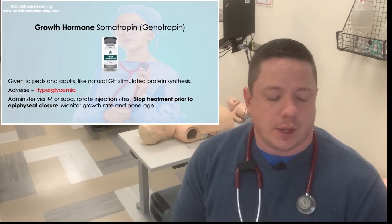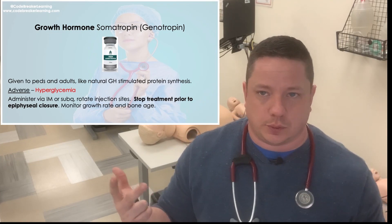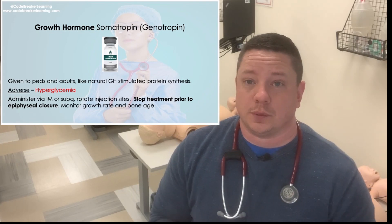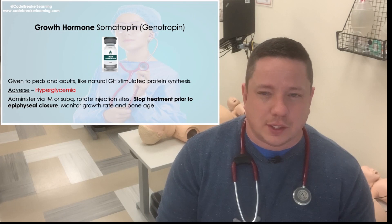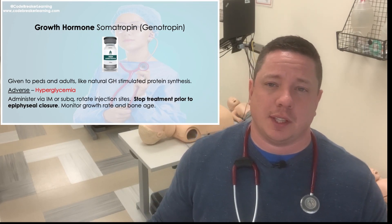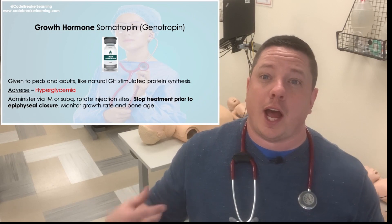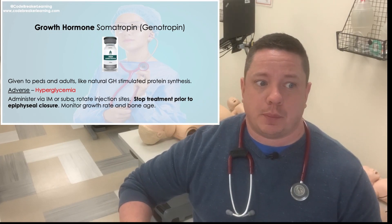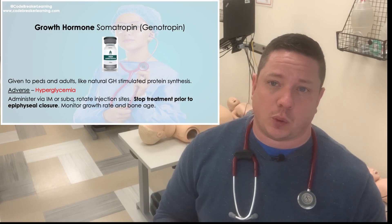The first medication is growth hormone — somatropin, also known as Genotropin. Somatropin is a growth hormone medication. What does growth hormone do? It makes you grow. It's given to both pediatrics and adults. It's like natural growth hormone and it stimulates protein synthesis. The therapeutic use: this medication is given to increase growth in pituitary dwarfism, where people have dwarfism as a result of hyposecretion from their pituitary gland, which is where growth hormone comes from.